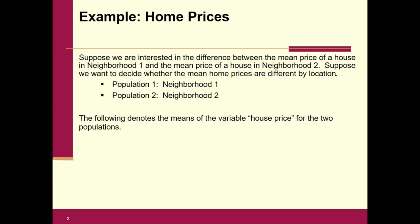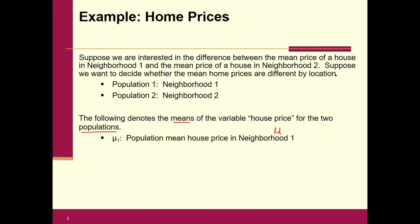The following denotes the means of the variable house price for the two populations. We're talking about means of populations, so that must mean mu. We have mu sub one — that's the population mean from neighborhood one — and mu sub two, the population mean from the second neighborhood, population number two.